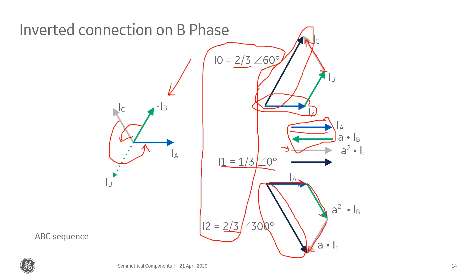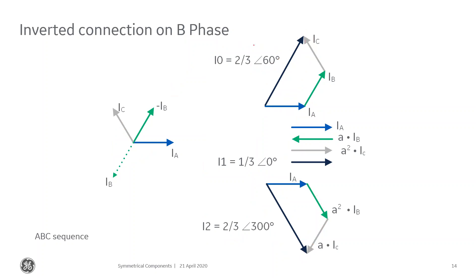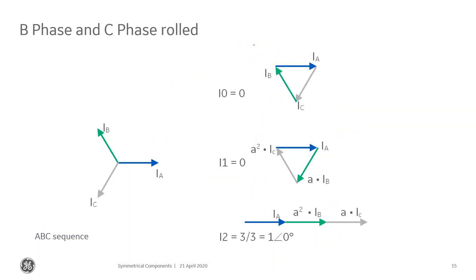One of the things we should always do when commissioning protective relays or meters is look at the positive, negative, and zero sequence components from our metered quantities to verify we've eliminated wiring errors. This can immediately point out a wiring error — though then you have to figure out what that wiring error is.